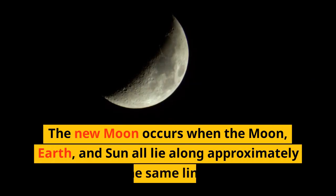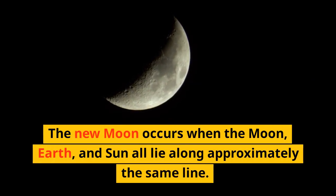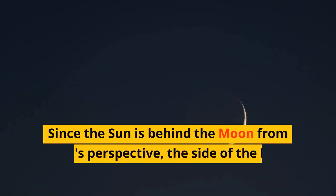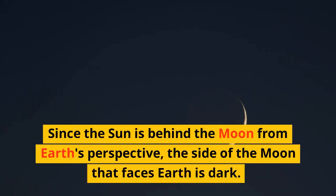The new moon occurs when the moon, Earth, and sun all lie along approximately the same line. Since the sun is behind the moon from Earth's perspective, the side of the moon that faces Earth is dark.